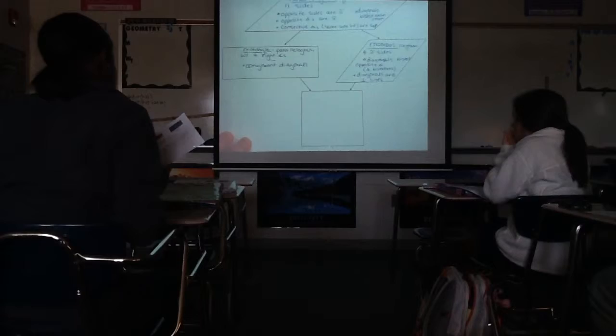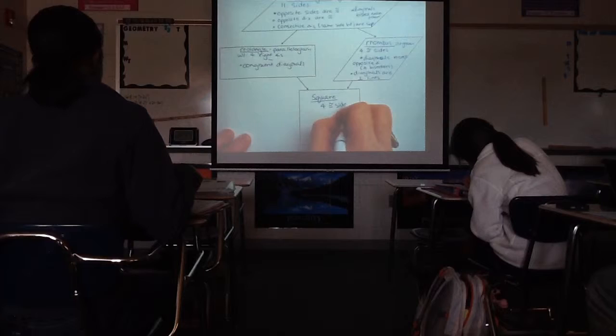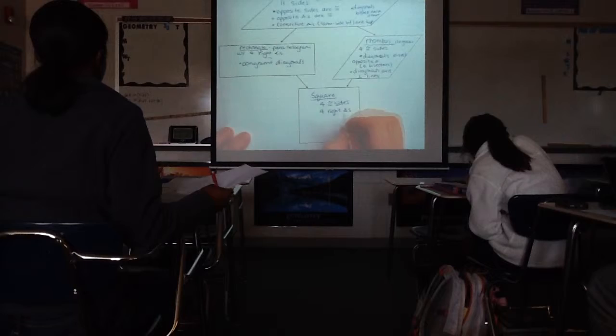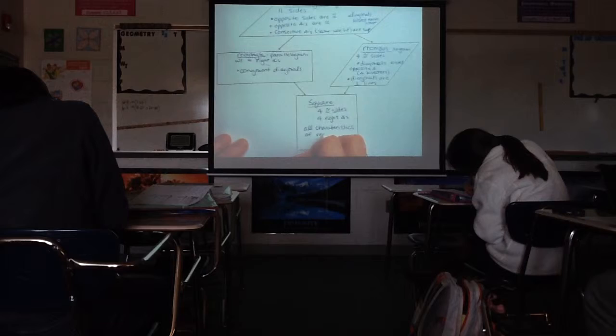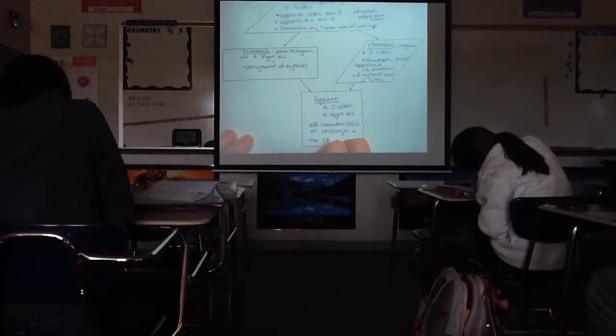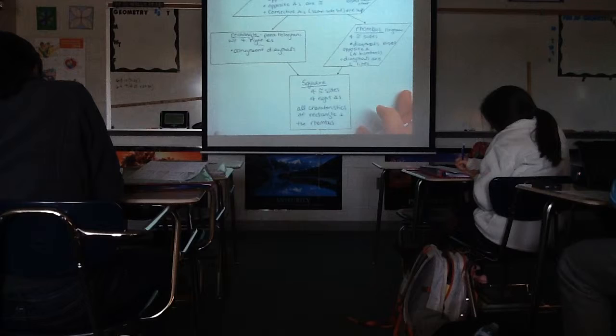The last one is the square. The square has four congruent sides and four right angles. So the square shares all the characteristics of the rectangle and the rhombus. For the square, the diagonals are congruent, perpendicular, and form angle bisectors.